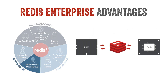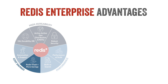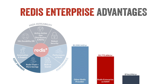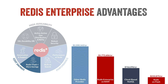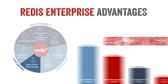Redis on Flash extends Redis to a combination of RAM and Flash SSDs, using an intelligent approach to tiering, delivering stable performance and sub-millisecond latency. This brings enormous cost savings compared to any other NoSQL solutions, whether deployed on-premises or in the cloud, especially when you have extremely large datasets.